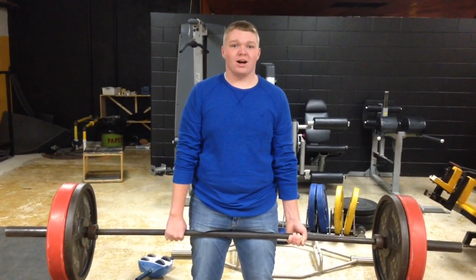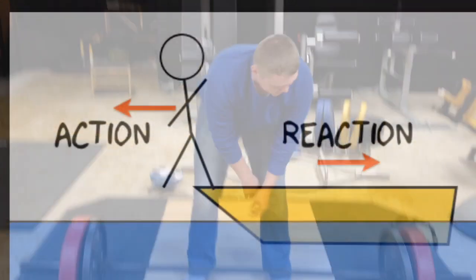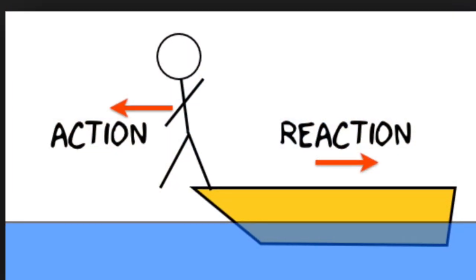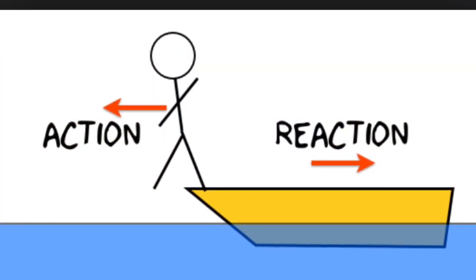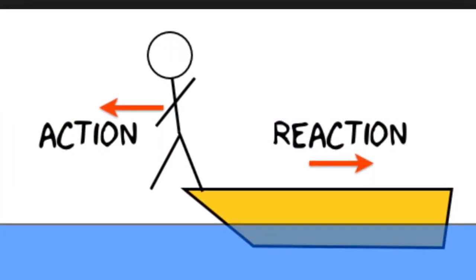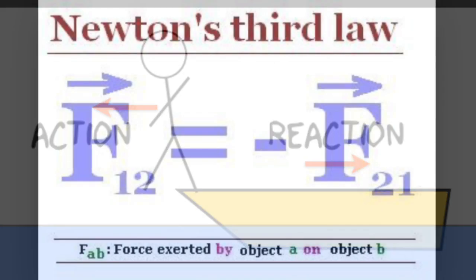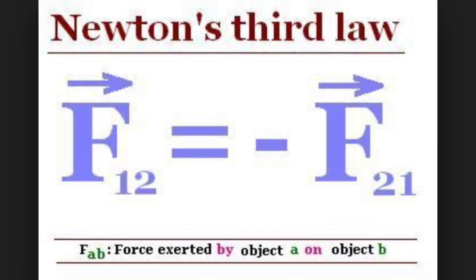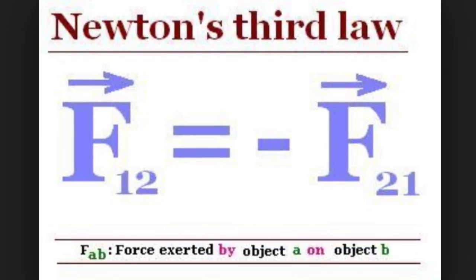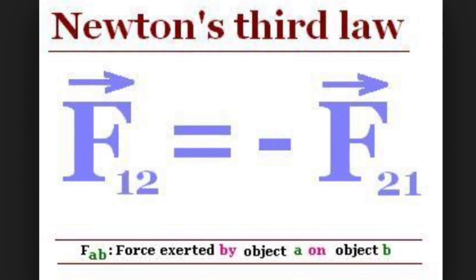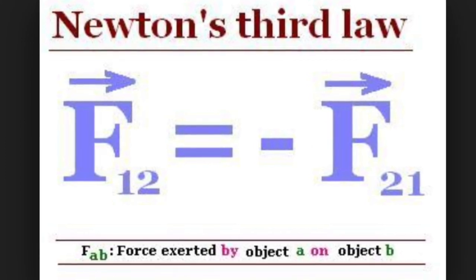Now we can discuss Newton's Third Law. Newton's Third Law states that for every action, there is an equal and opposite reaction. The formula for this law is F1 equals negative F2, or force one equals negative force two.